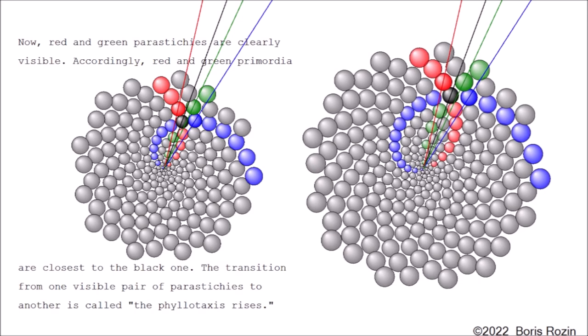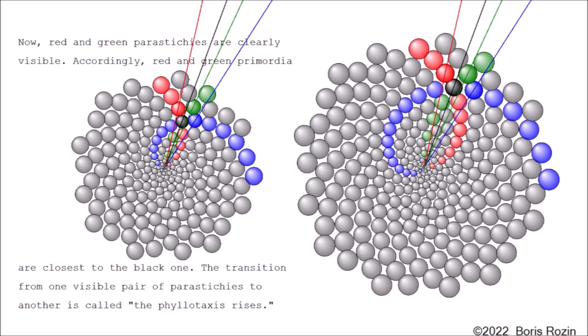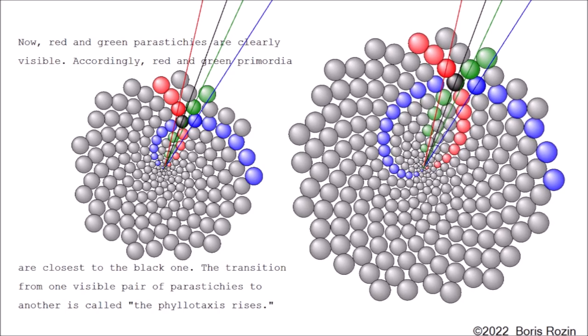Now, red and green parastichies are clearly visible. Accordingly, red and green primordia are closest to the black one. The transition from one visible pair of parastichies to another is called the phyllotaxis rise.